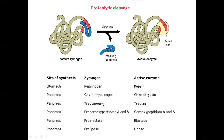Examples of proteolytic cleavage include pepsinogen, which is the inactive form that converts into the active form pepsin. This biosynthesis occurs in the stomach. Other pancreatic enzymes present in the pancreatic region are similarly converted into their active forms.